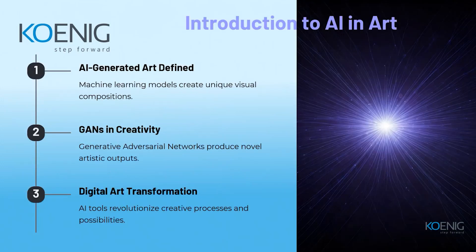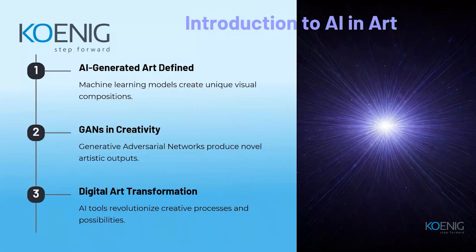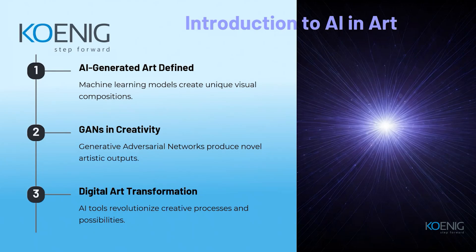Now let's go with our topic — how we can use artificial intelligence for art creation, and how AI algorithms can help us create different arts. First we'll look at how AI-generated art is defined, then we'll explore GANs in creativity, and then digital art transformation. AI-generated art means machine learning models create unique visual compositions.